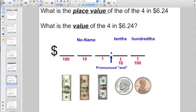So, let's take a look at this guy. What is the place value of the 4 in $6.24? So, again, if I use my place value chart, $6.24, what would be the place value of it? That would be the hundredths place, right?